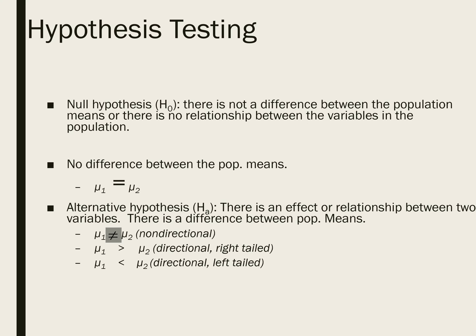We could symbolize that by, if there were two populations — population one and population two — and they essentially have the same mean and the null hypothesis is true, we could put mu subscript one equals mu subscript two. So that would be the null hypothesis.